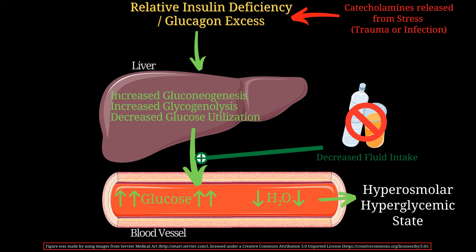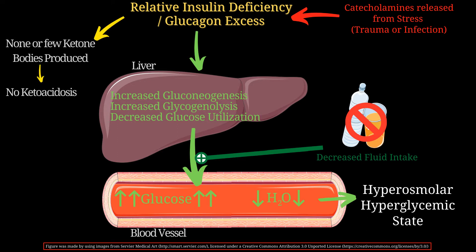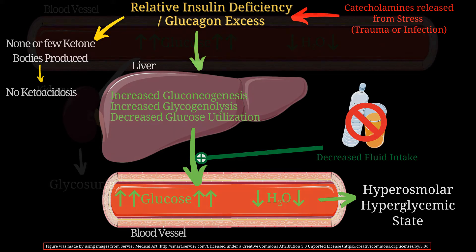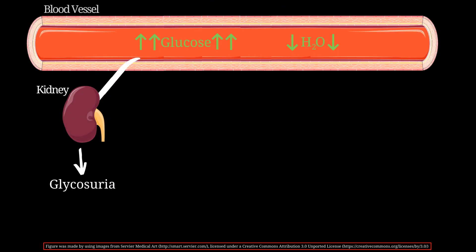An important point to mention is that no ketone bodies are formed, as some amount of insulin is still present, preventing ketoacidosis and differentiating this disease from diabetic ketoacidosis.